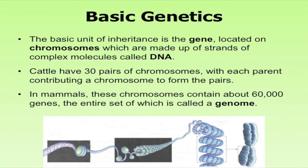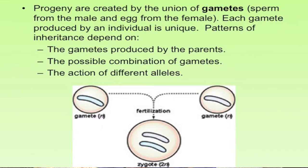When progeny are created by the union of gametes — the sperm from the male and the egg from the female — each gamete produces an individual that is unique. These patterns of inheritance depend on several things, including environmental influences. There are lots of possible combinations of gametes across the genes, and the action of different alleles also factors in, making genetics very complicated. We'll talk more about color inheritance, but other traits become more complex due to these interactions.